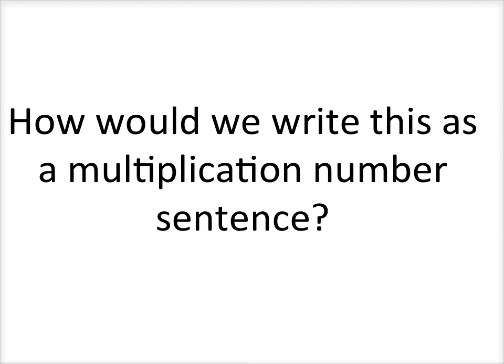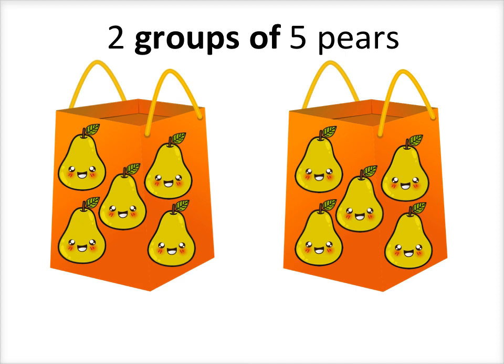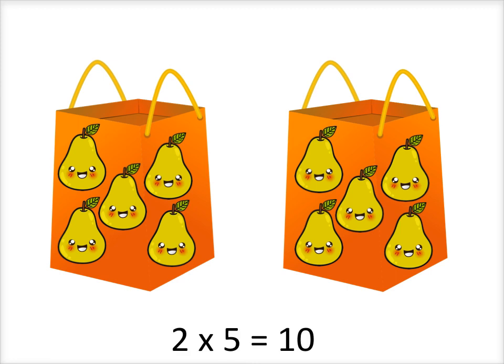How would we write this as a multiplication number sentence? We know there are two bags of pairs, or we can say there are two groups of pairs. So we can write two times five, because there are two groups of five. We know that five plus five equals ten, so two times five equals ten. That's right.